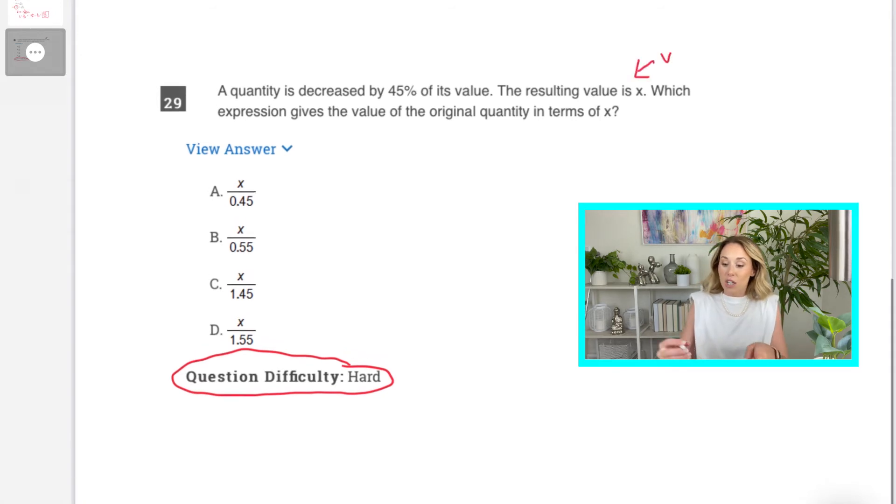It's the second to last question on section 4. But again, you have a variable in the problem, which is awesome because you also have it in the answer choices. So, you can use nice numbers. The problem says a quantity is decreased by 45% of its value. The resulting value is x. Which expression gives the value of the original quantity in terms of x?